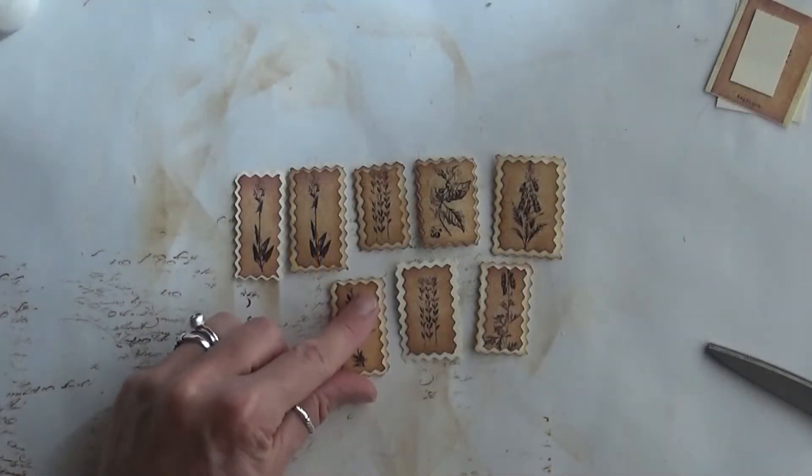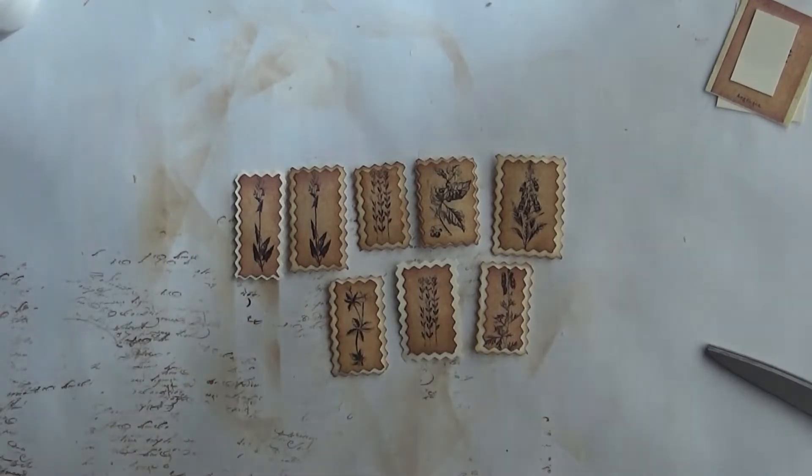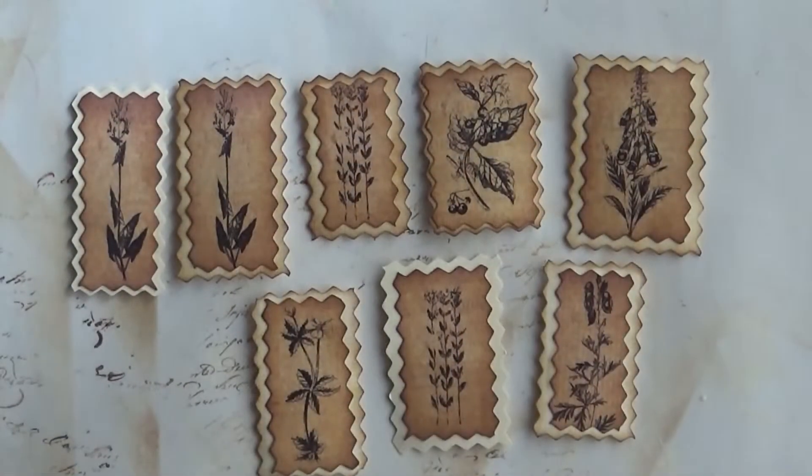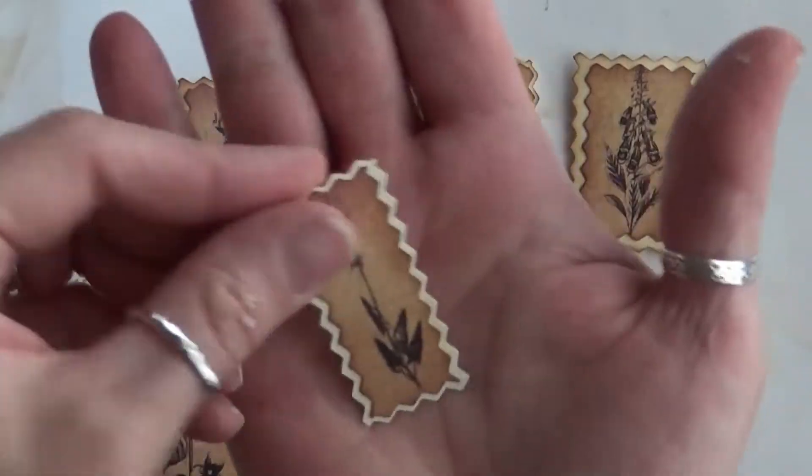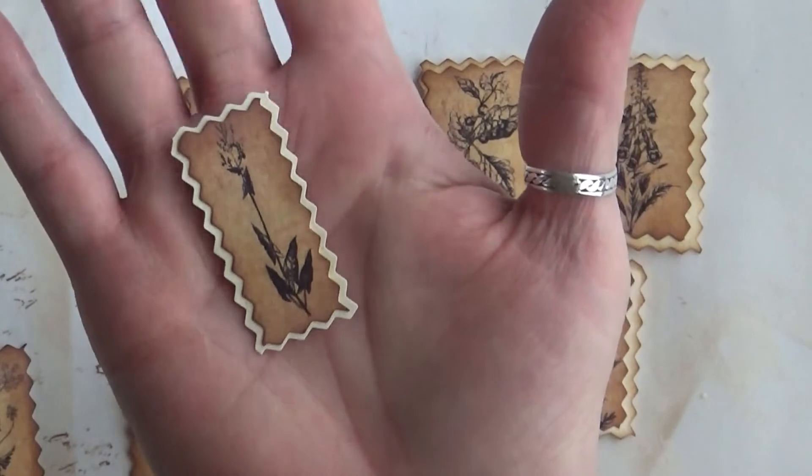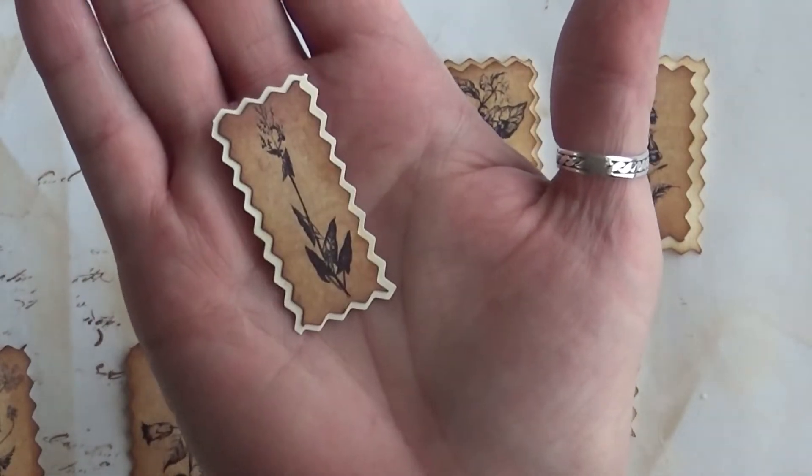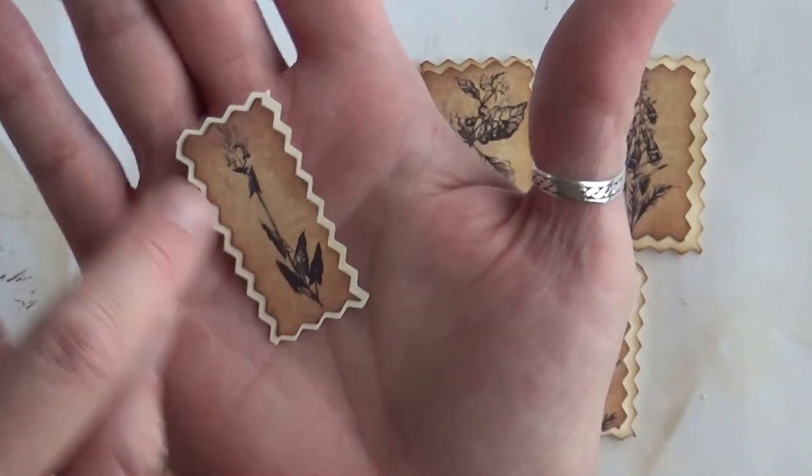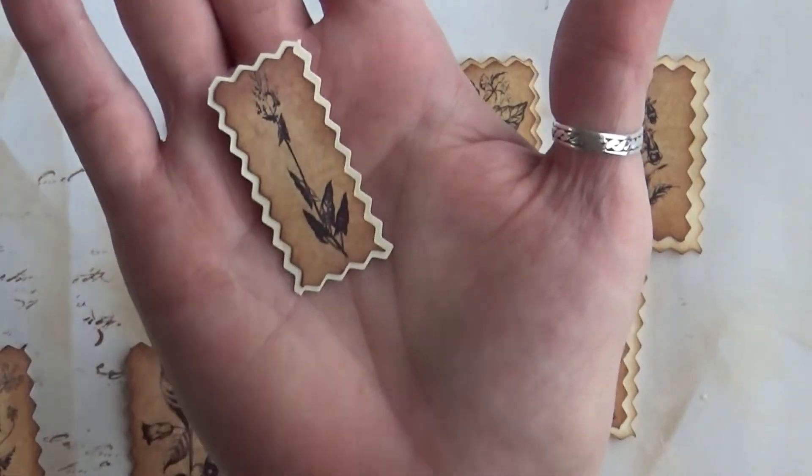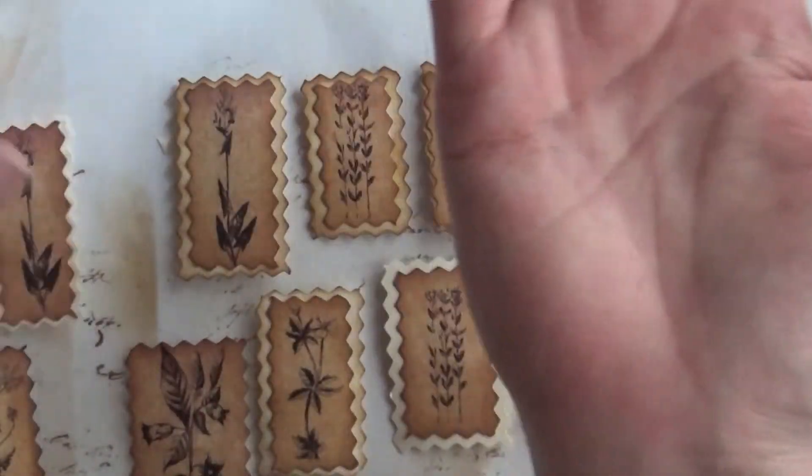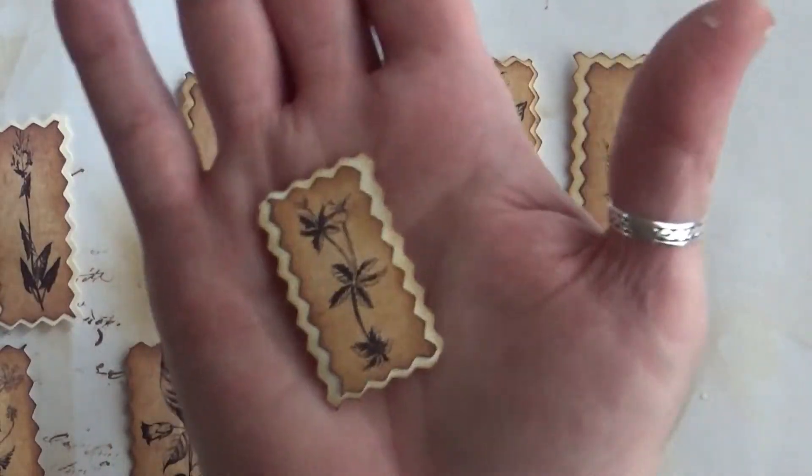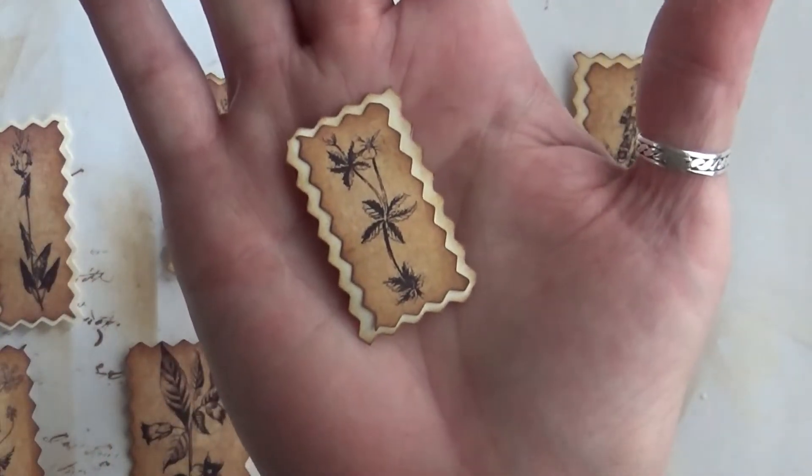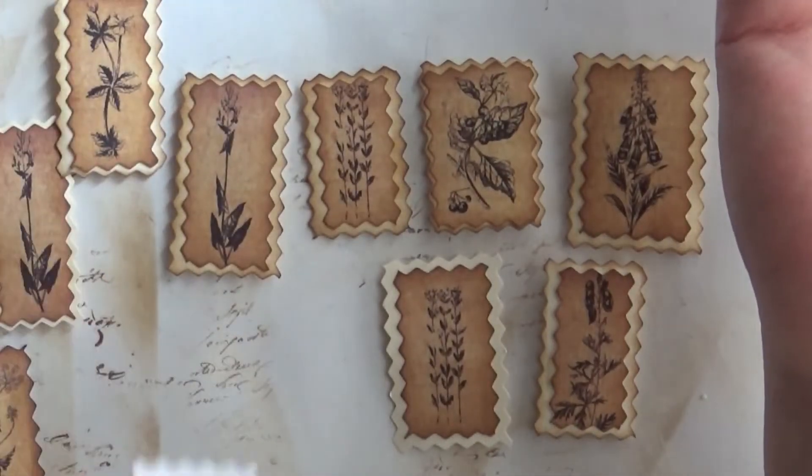So I cut up these little botanicals - let me bring you in - the same way, real easy peasy. And then some of the borders I left completely cream colored without any ink, and then I did ink the botanical itself just on the edges. And then I did some other borders where I inked the border.